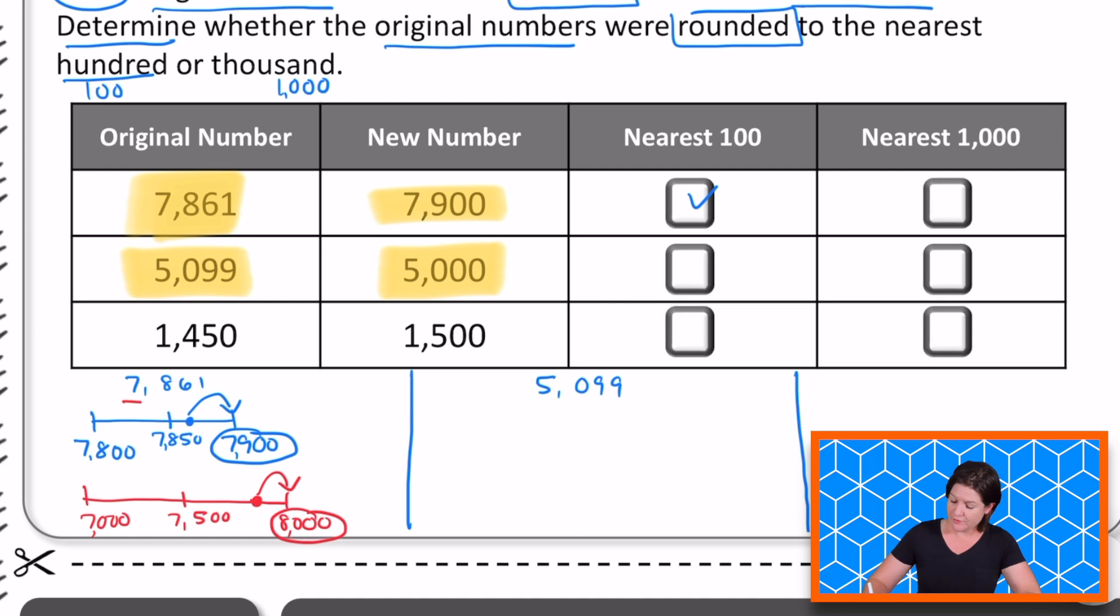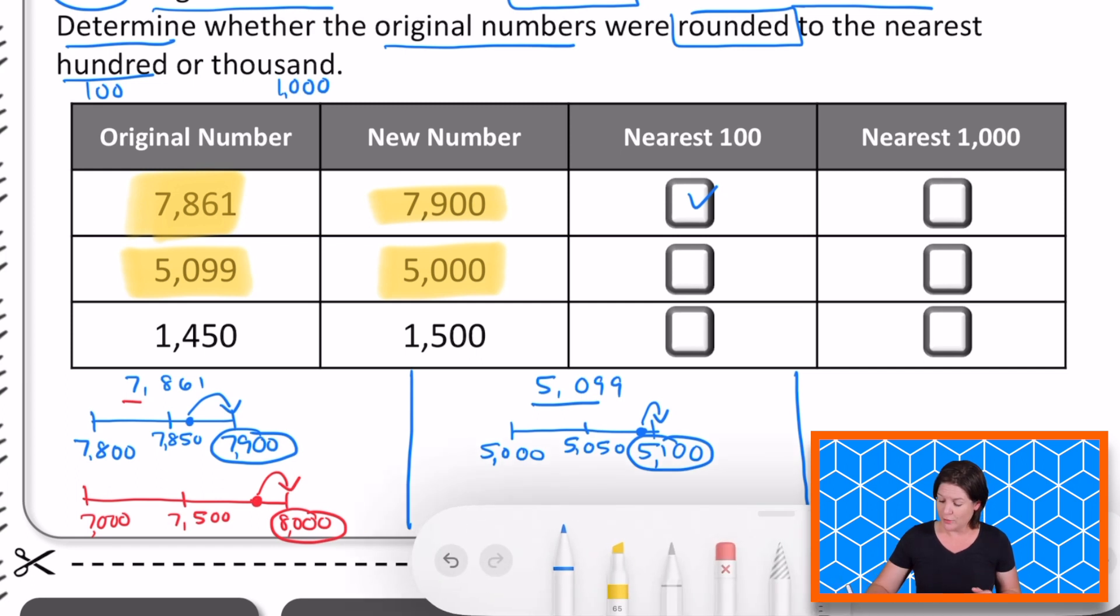So we have 5,099 and first we need to round to the nearest hundred. So we have 50 hundreds. That would be between 5,000 and 5,100. The halfway point would be 5,050. 5,099 is really close to 5,100. So we've rounded up to 5,100. But that's not the new number. So it's not rounding to the nearest hundred that's happening with that original number.